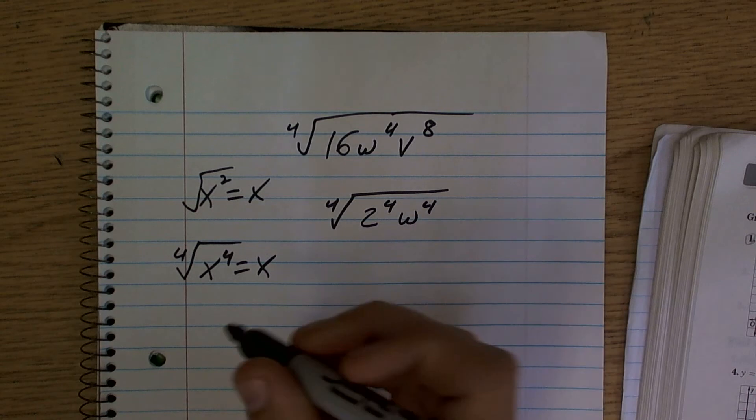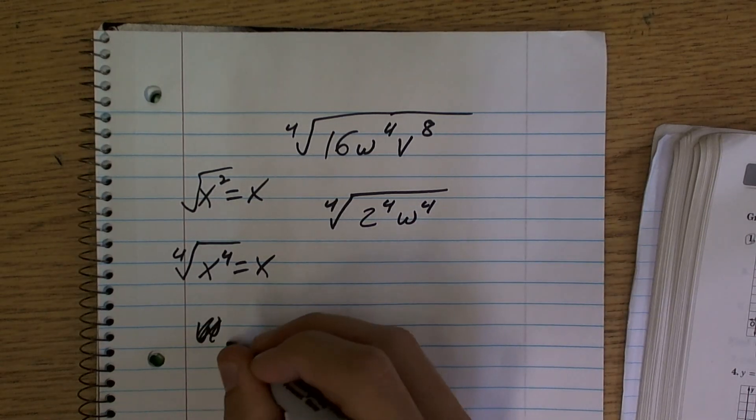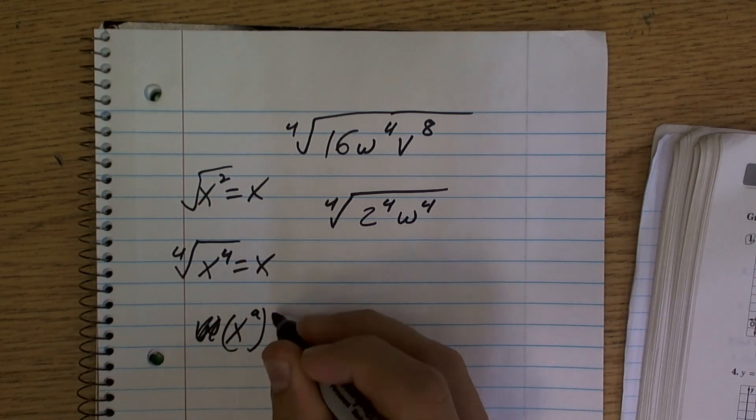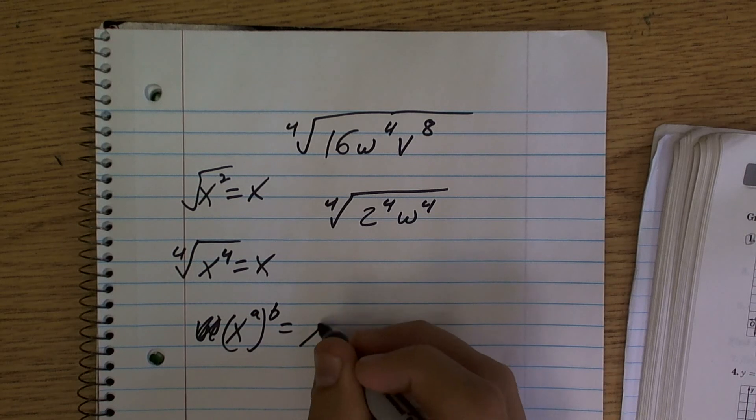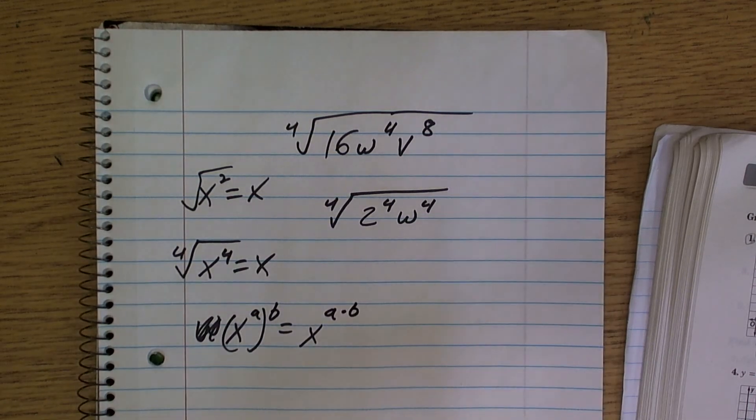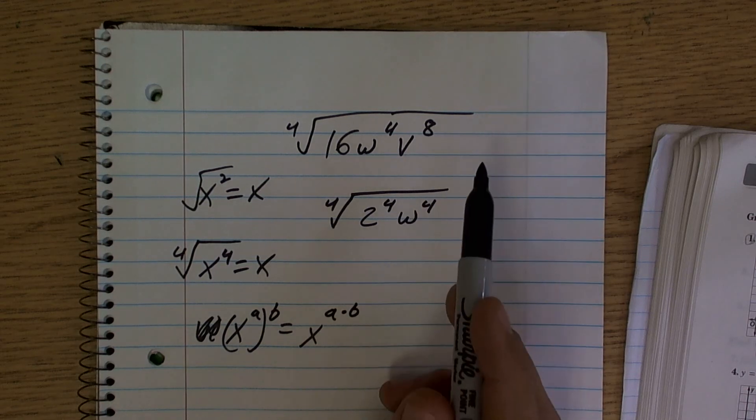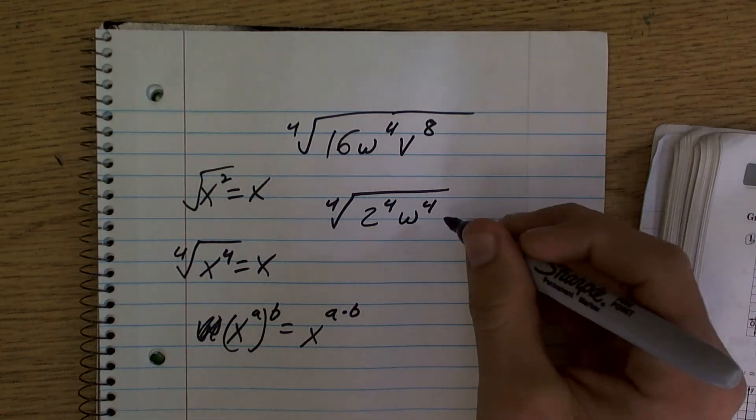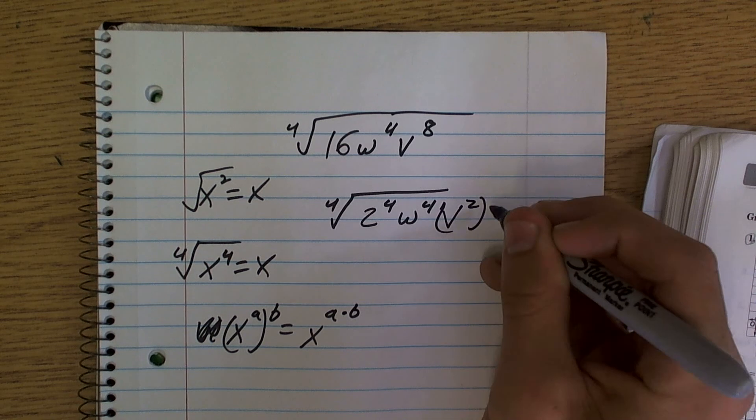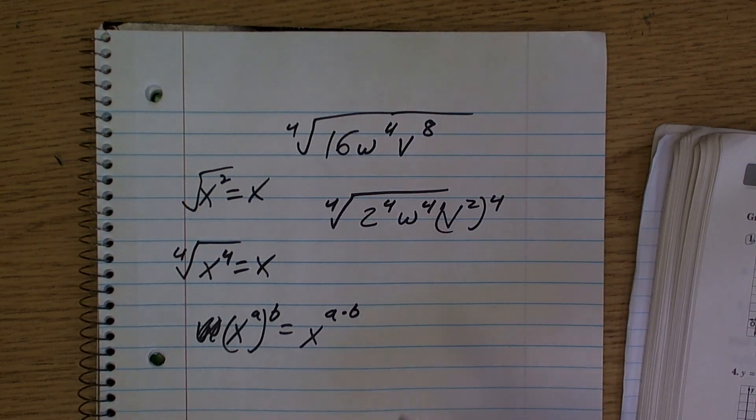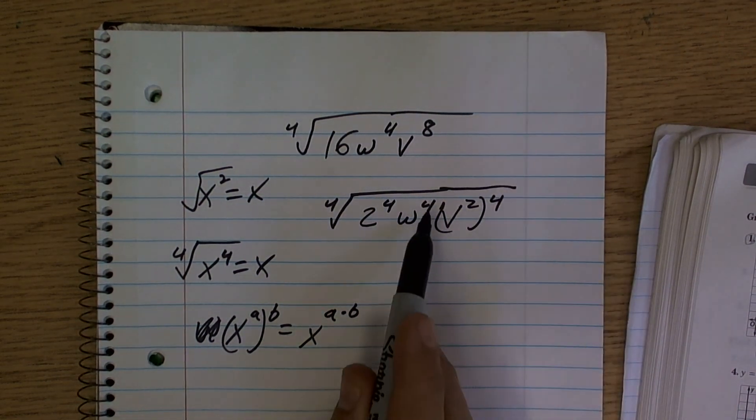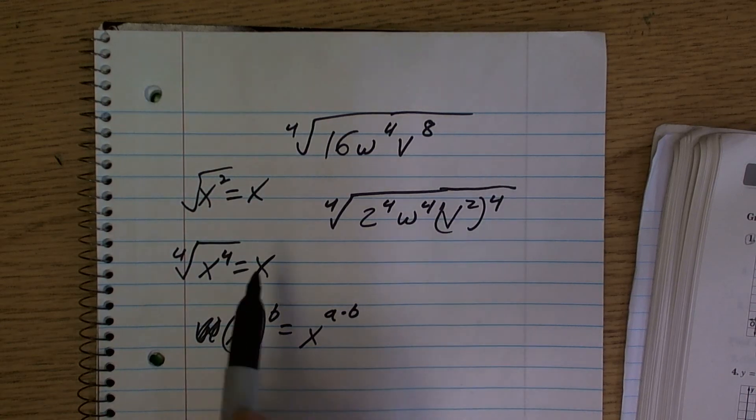And then I need to think, remembering the rules of exponents, anything of an exponent raised to another exponent equals multiplying the exponents. So I need to multiply 4 by something to get to 8, and we obviously know that answer is going to be 2. So I write this as v squared to the fourth, because I want that fourth so it will cancel out.